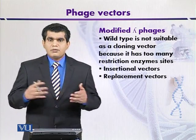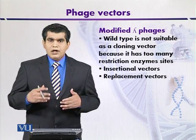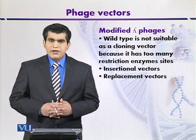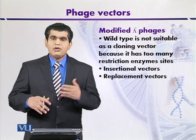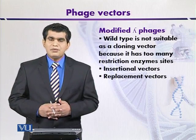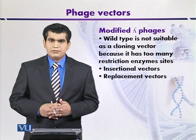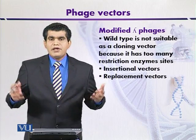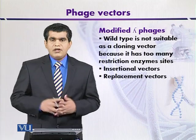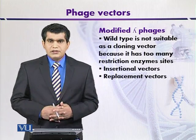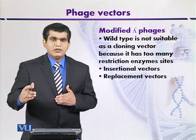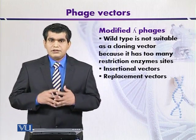But nowadays, to solve the problem of multiple cloning sites, researchers have developed some modified lambda phages that can be used as a cloning vector. These modified lambda phages have one or two restriction sites where the DNA fragments can either be removed or inserted.